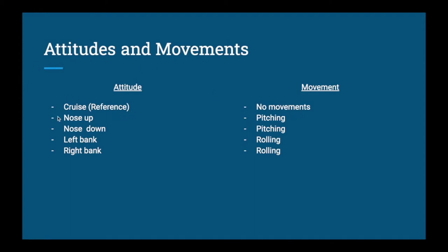Now for the in-air portion — let's talk about attitudes and movements. Starting with the different attitudes: we have the cruise attitude (also known as the reference attitude), nose up, nose down, left bank, and right bank. All attitudes are relative to the horizon. To go from cruise to nose up or nose down, we have to move the airplane — that movement is called pitching. To go from cruise to a left or right bank, that movement is called rolling.